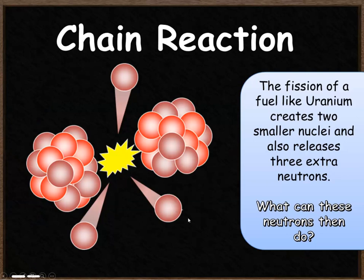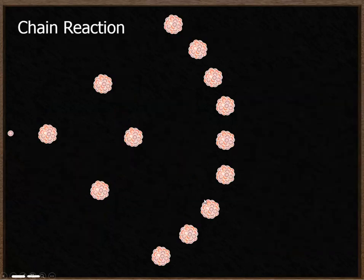Because these neutrons have been released they can now join with nuclei of some more unstable isotopes and then cause them to undergo nuclear fission. So this is our first neutron coming towards our first atom, causes it to undergo fission, releases three neutrons.